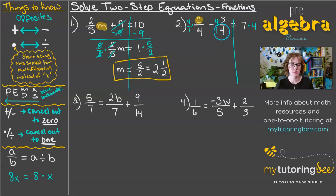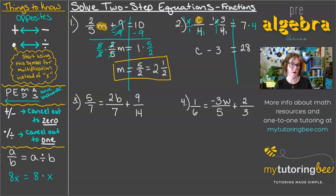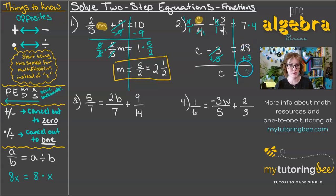Don't forget that we need to multiply all of the terms by 4 — not just the fractions, everything. This 4 and this 4 cancel out, giving us 1 and 1. So 1c/1 is just c. This 4 and this 4 cancel the same way, and we get 1 times 3 = 3, so 3/1 is just 3. Equals, and then 7 times 4 is 28. Now that we've cleared the fractions, we just have whole numbers. We undo that subtraction of 3 by adding 3 to both sides, leaving us with c, and 28 plus 3 gives us 31. So c equals 31.